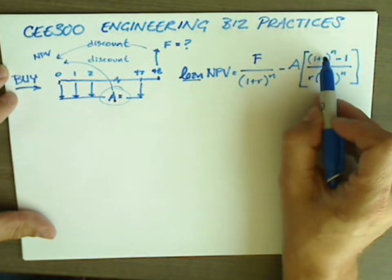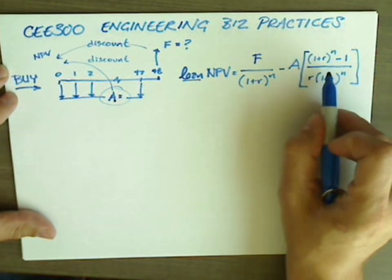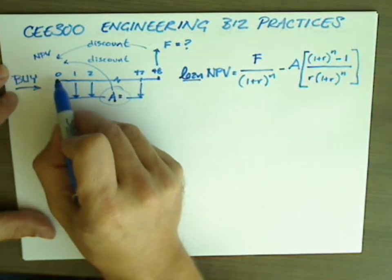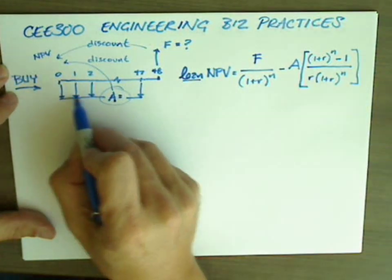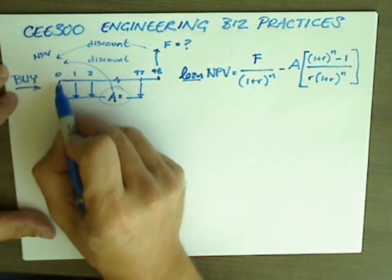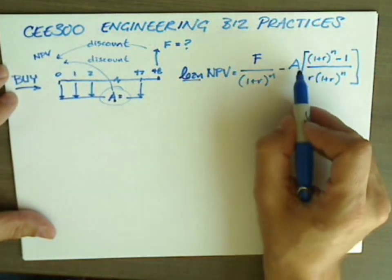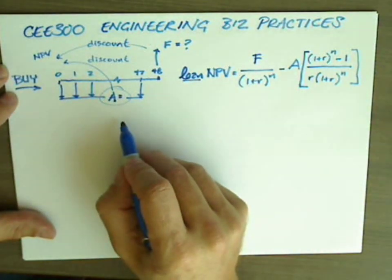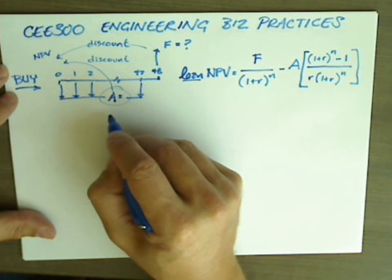and that's multiplied by the present worth factor. This is a ratio that we saw in the last video that takes this series and expresses it in a single value at time equals zero. You might ask yourself, how do we get A, the monthly payments? And so we looked at that in the last video too.